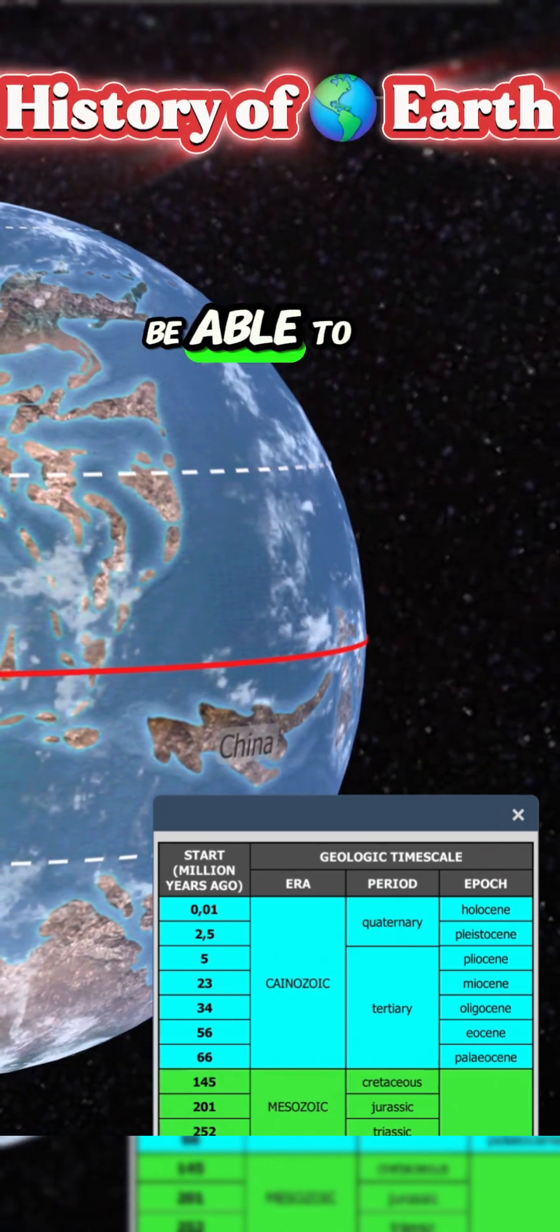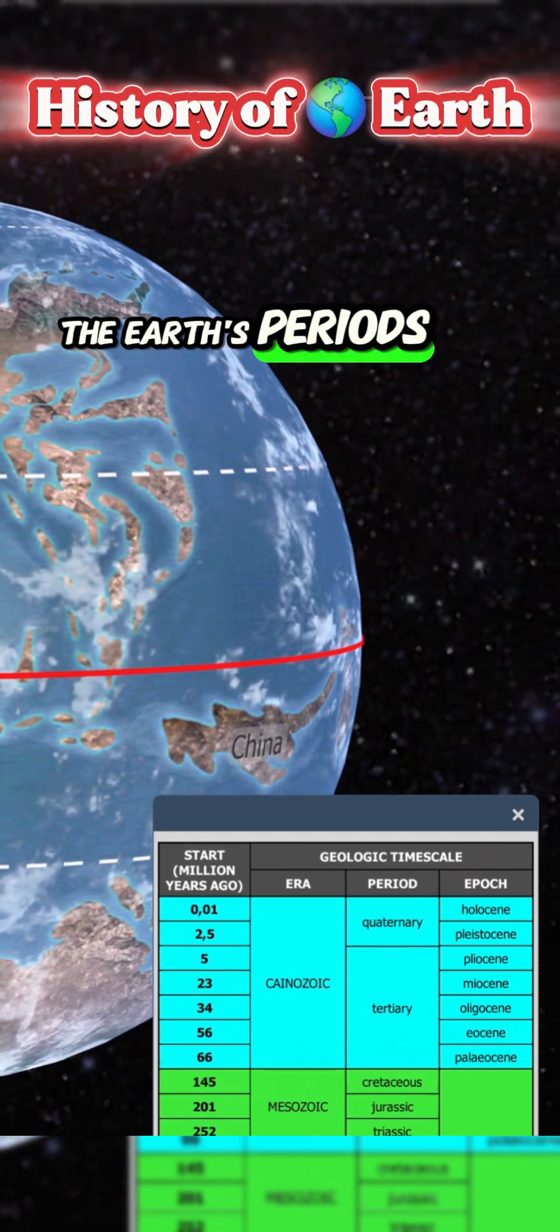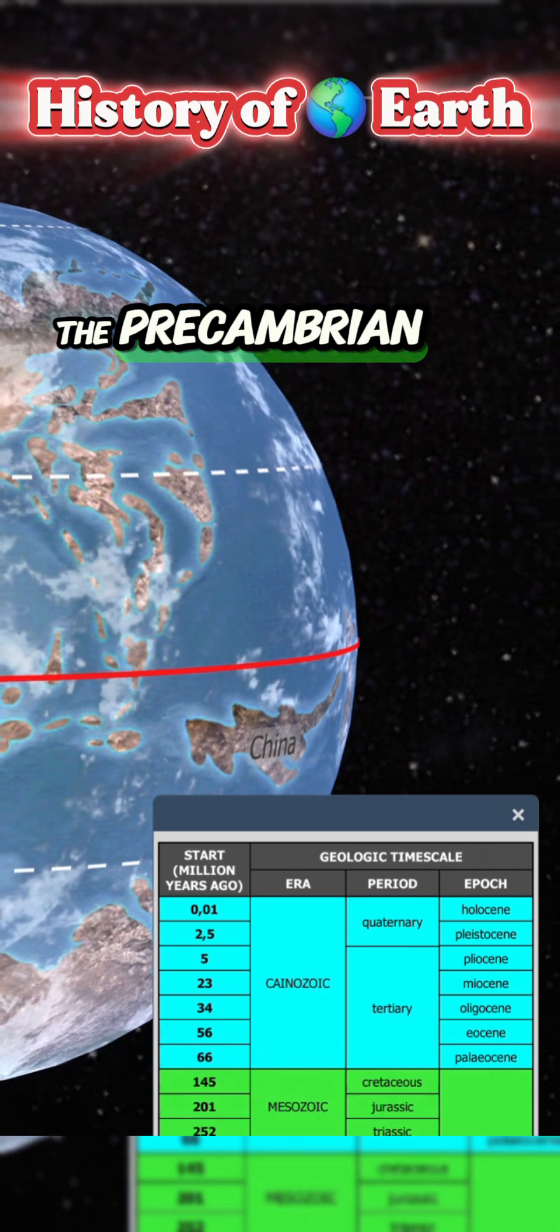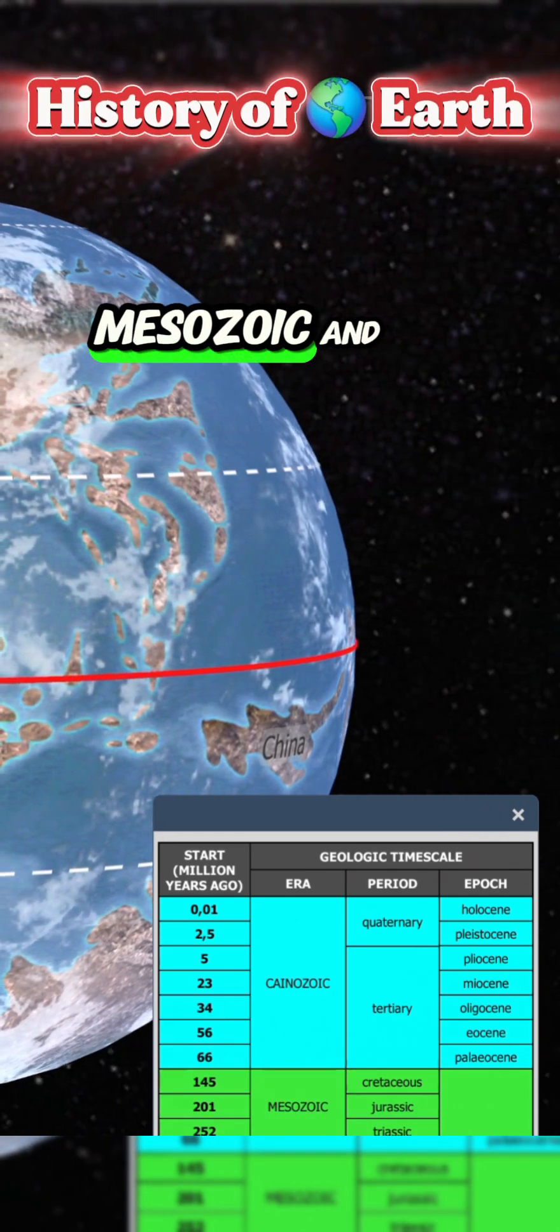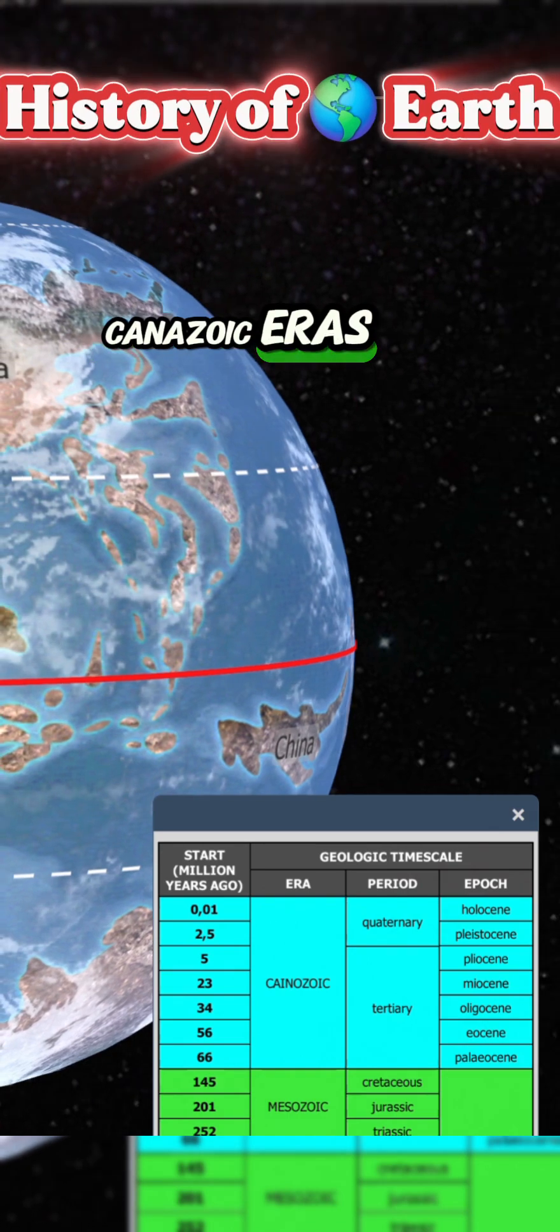In order to differentiate the Earth's periods from those of mankind, the Precambrian, Paleozoic, Mesozoic, and Cenozoic eras were created.